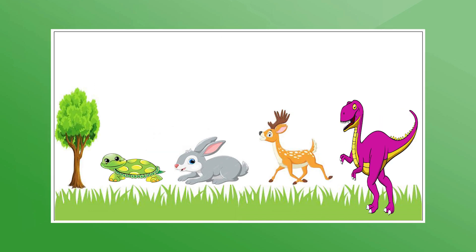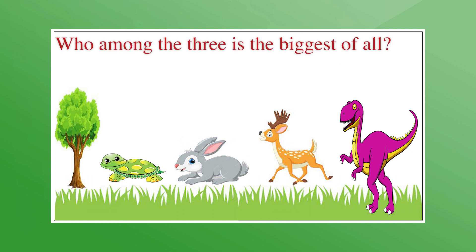Just when the dinosaur was about to run and catch the rabbit, he saw a deer coming towards the tortoise and the rabbit. The deer joined them and they all started playing together. The dinosaur got thinking again, 'Hmm, who should I eat now? Of course the biggest of all!' Can you help the dinosaur find out the biggest animal? Is the rabbit still the biggest? No, it isn't. Is the deer the biggest? Oh yes, now the deer is the biggest animal among the three.